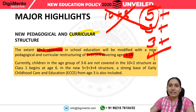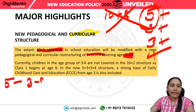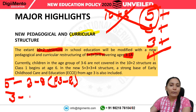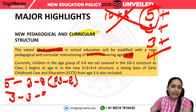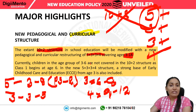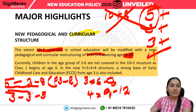The first 5 years refers to the age group of 3 to 8 years — from play school to class 2. The next 3 years covers class 3 to 5. Another 3 years covers class 6 to 8. The last 4 years refers to class 9 to 12. This is the new categorization, and the most important and emphasized segment is the first 5 years.